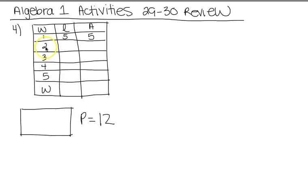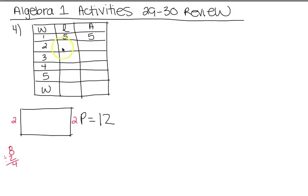On a width of 2, that would mean you have 2 and 2, which is a total of 4, giving you 8 units remaining for the other two sides. 8 divided by 2 gives you 4, so the length should be 4. Then width times length, 2 times 4, gives us area of 8.